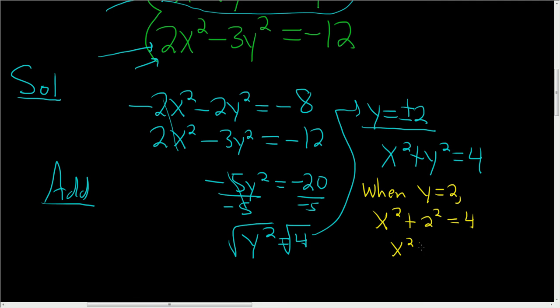So x squared plus 4 equals 4. So x squared equals 0. And you take the square root, and you just get x equals 0.